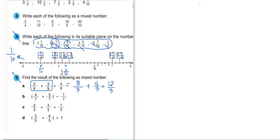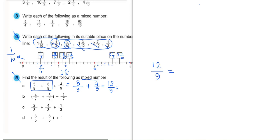We must put it as a mixed number. Is 12 divisible by 9? No. So: 12 over 9 equals 9 over 9 plus what? 12 minus 9 equals 3 — so 3 over 9. And 9 over 9 equals 1, plus 3 over 9. We can simplify 3 over 9 by dividing numerator and denominator by 3.